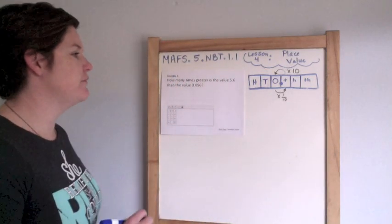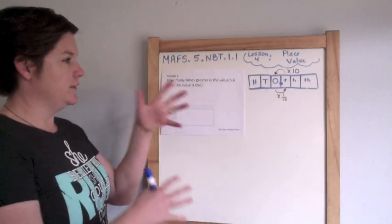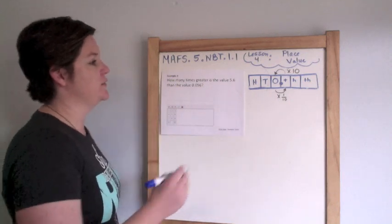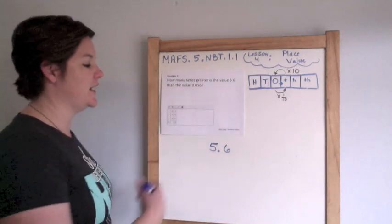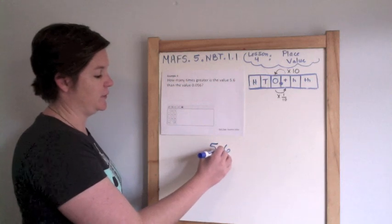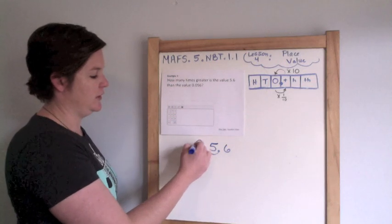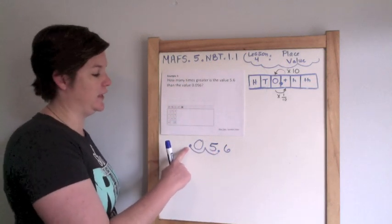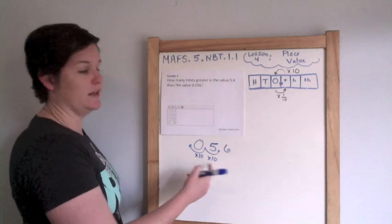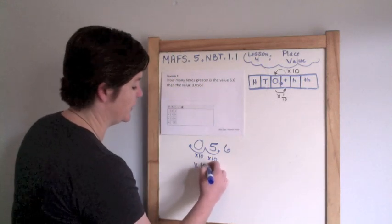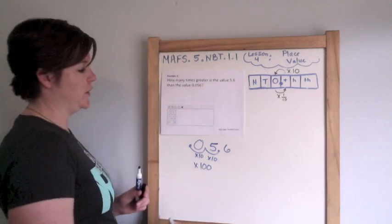Example two: how many times greater is the value of five and six tenths than the value of fifty-six thousandths? We have the same digits but different place values. Going from 5.6 to 0.056 is two place value jumps — so that's times ten, times ten, which is times one hundred. Five and six tenths is one hundred times greater than fifty-six thousandths. In the equation editor I would put 100.